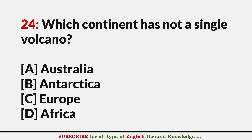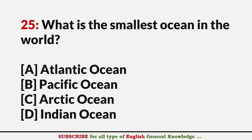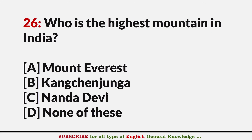Which continent has not a single volcano? Answer A: Australia. What is the smallest ocean in the world? Answer C: Arctic Ocean. Who is the highest mountain in India? Answer B: Kanchenjunga.